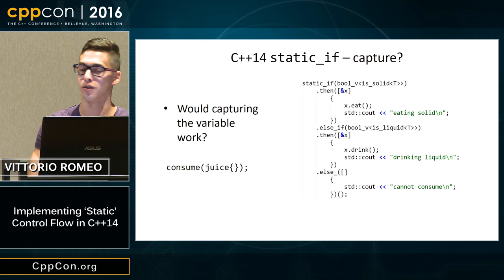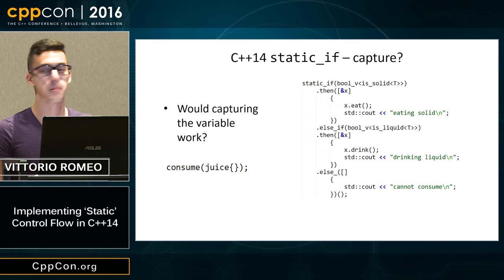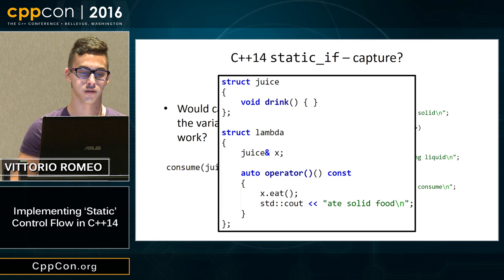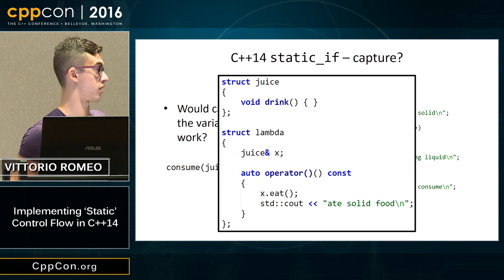Why don't we just capture the variable instead of passing another one and calling it again? We cannot capture variables when using static if because we need to defer instantiation to a later step. If we had captured the variable, the compiler would generate a non-templated operator(), which gets immediately instantiated and won't compile because obviously we cannot eat juice — we can only drink it.